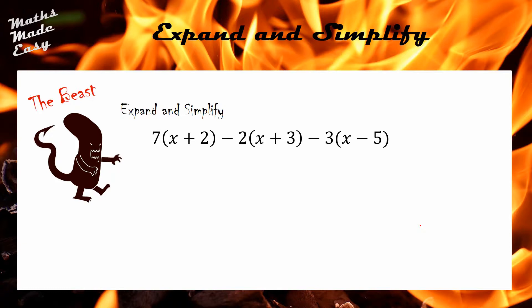Let's give this one a whirl then. 7 times x is 7x and 7 times positive 2 is positive 14. Moving on to the next bracket, negative 2 times x is negative 2x and negative 2 times a positive 3 is negative 6. Negative 3 times x is negative 3x and negative 3 times negative 5 is positive 15.